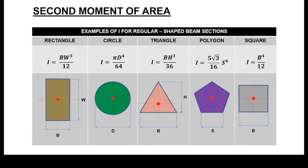When it comes to a square, it's simply I is equal to b to the power of 4 over 12. So assuming that b and w are more or less equal, that characterizes the square — just one of the sides to the power of 4 divided by 12. These are standard formulas that you can find in any mechanics of materials textbook.